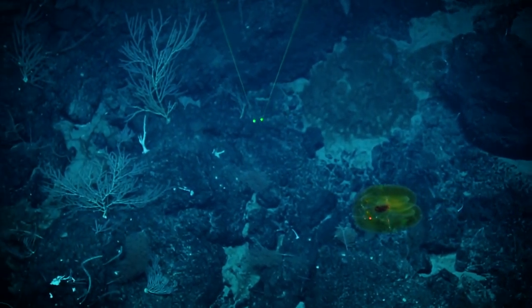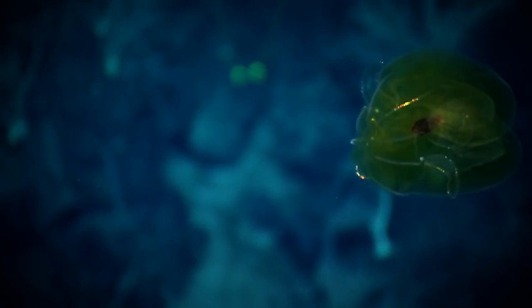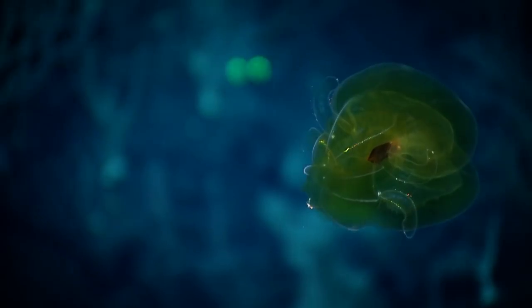So it has these big lobes. And on the left, those glittering bioluminescent ctenes are the comb rows. It's actually swimming with those. Oh, beautiful.